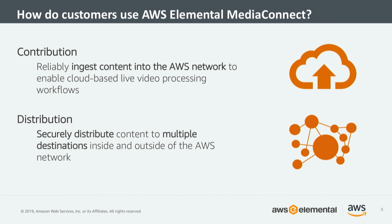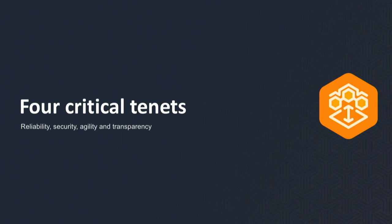As we started to flesh out this solution, we realized we have this great network at AWS — it's globally reaching, managed, highly available, and high bandwidth. So why not allow customers to explore using AWS Elemental Media Connect for broadcast grade distribution workflows? When we talk about the different workflows with Media Connect, we always come back to two concepts: contribution — secure, reliable ingest into the AWS cloud — and distribution, the transport of live video around the world.